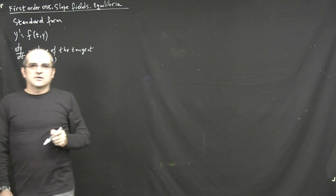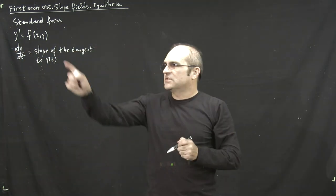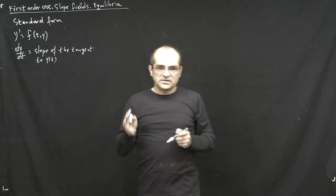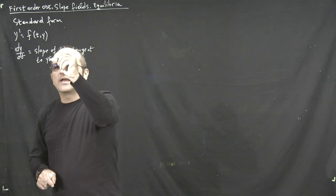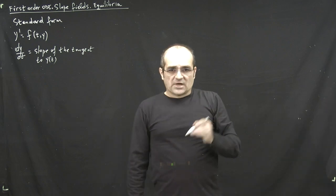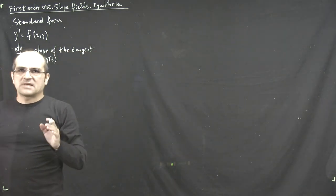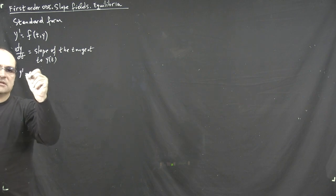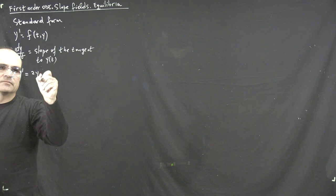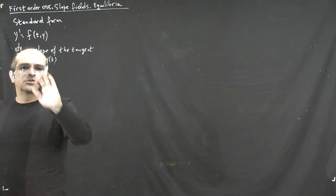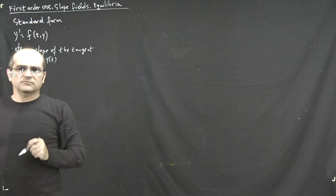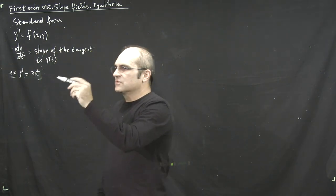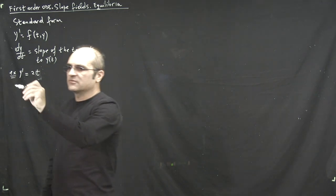By simply plugging in some value of t and y on the right side, we can actually compute the slope of the tangent. We may not be able to plot the exact solution if we don't know how to solve for it, but we can certainly find the slope of the tangent to that solution. Let's look at a simple example that doesn't even require differential equations theory: y' equals 2t, something that doesn't depend on y on the right-hand side.